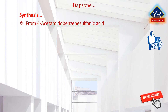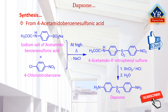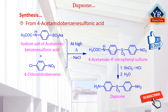Another way of the synthesis of Dapsone begins with 4-acetamidobenzene sulfonic acid, which is reacted with 4-chloronitrobenzene at high temperatures to give 4-acetamido-4-nitrodiphenyl sulfone. Reducing the nitro group in this compound with tin dichloride in hydrochloric acid, along with the simultaneous hydrolysis of the acetyl group under the reaction conditions, gives the desired Dapsone.